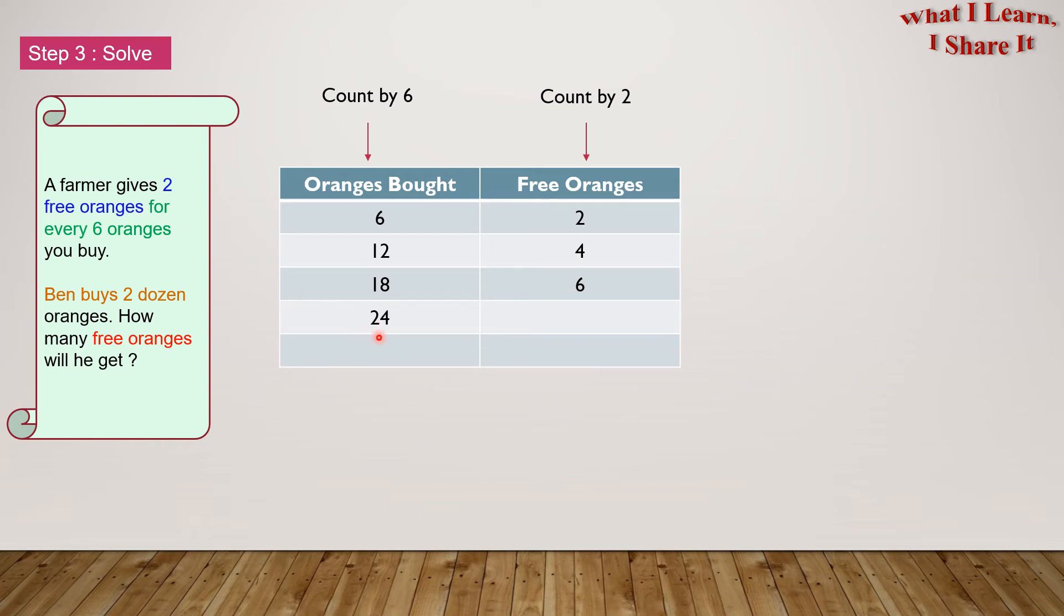If there are 24 oranges bought, then how many free oranges are there? Right, there are 8. So Ben gets 8 free oranges. We won't go on further because we know 2 dozens is 24.